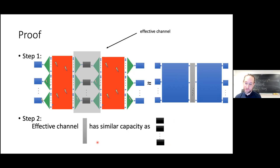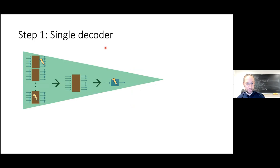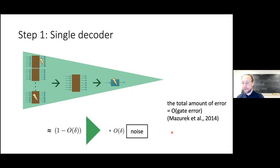The proof has two steps. Step one: take the noisy communication setup and reduce it back to the original noiseless communication paradigm, but now the channel becomes an effective channel — slightly correlated across uses, a bit more complicated. Step two: show that this effective channel has a similar capacity as the original channel. Then the fault-tolerant capacity equals the noiseless one up to small corrections.